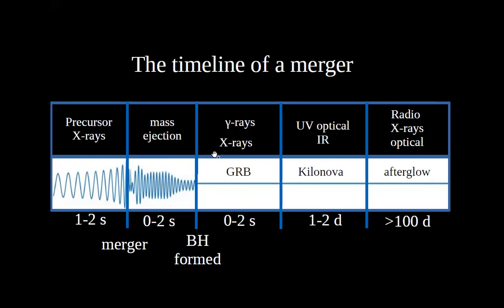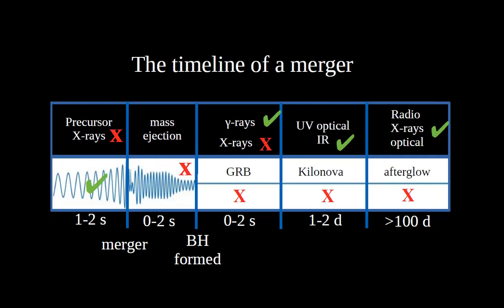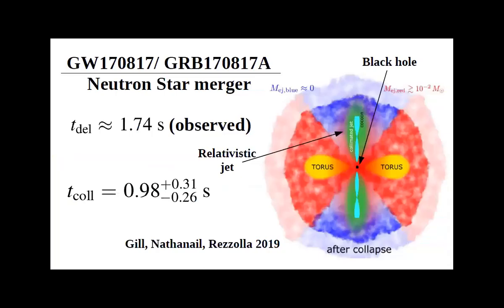The expected observable sequence: a possible precursor in X-rays/radio, then mass ejection, then gamma rays, X-rays, and multi-frequency afterglow. For GW170817: pre-merger gravitational waves were detected; no precursor or post-merger GW signal; gamma rays 1.7 seconds after merger; kilonova in optical/infrared/UV starting one day after and lasting a couple of days; radio and X-ray afterglow first detected nine days after merger, continuing for hundreds and thousands of days.